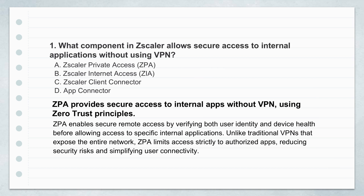Let's jump right in and unpack this first crucial area: secure access for internal apps. Picture this — you need secure access to your company's internal applications, but without all those old VPN headaches, the slow speeds, the clunky connections. What Zscaler component makes that happen smoothly? The answer in the Zscaler world is Zscaler Private Access, or ZPA. Its whole purpose is providing secure remote access to those internal apps, but without using traditional VPNs at all.